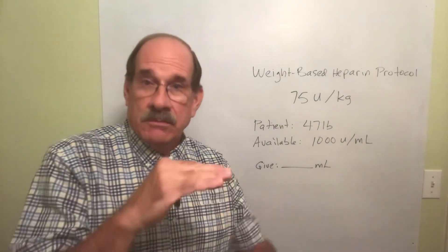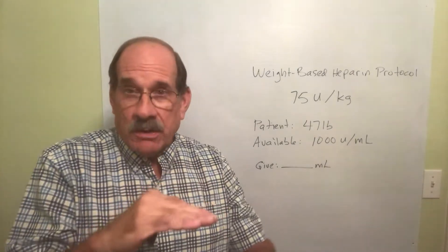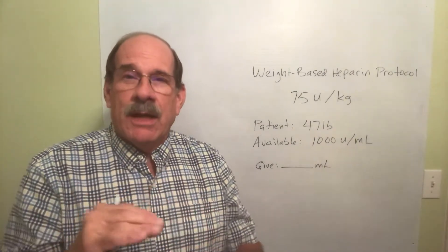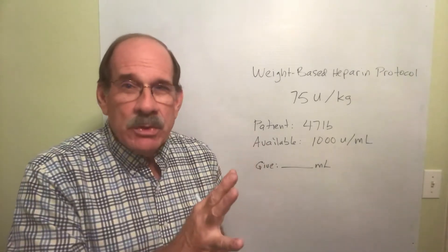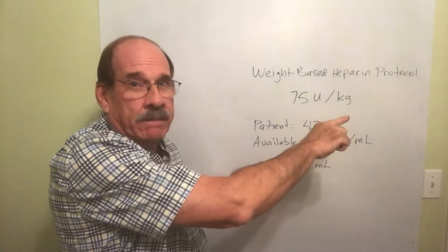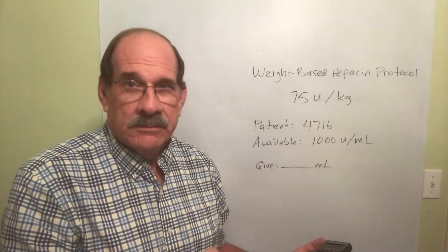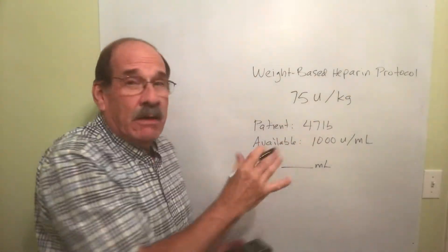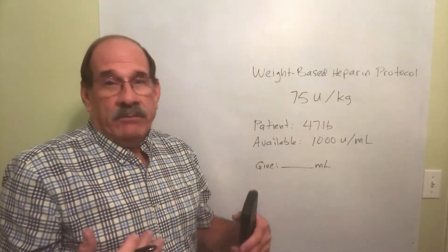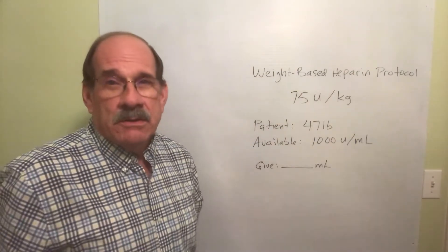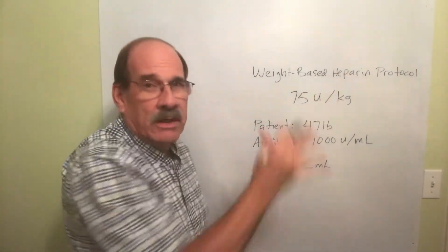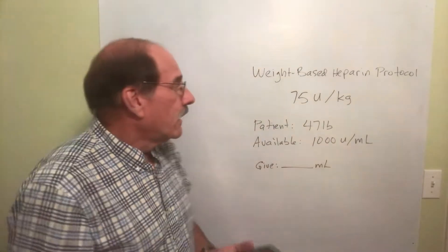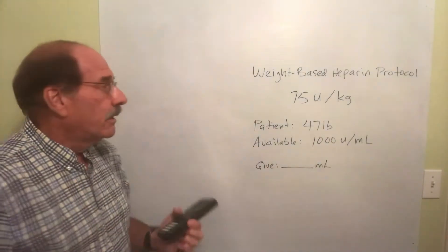When you look at those charts in your book, it's more complex than this. All I'm doing is just this part — that other stuff in the chart we're not going to go to at this point. So I'm supposed to give — now the numbers may change from patient to patient, this doctor may prefer to give this or that — so that's what it says to give: 75 units per kilogram.